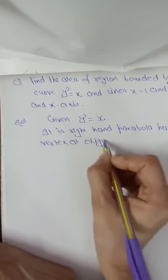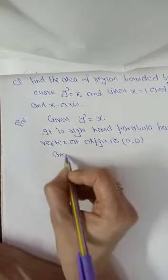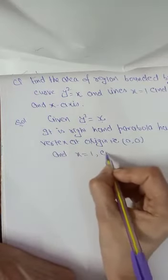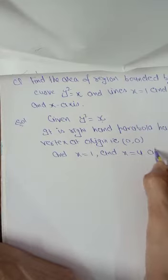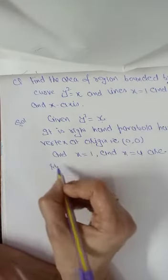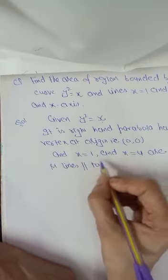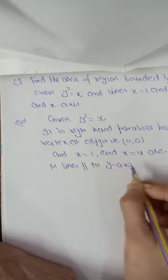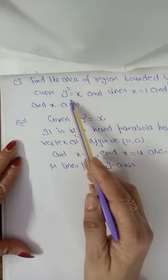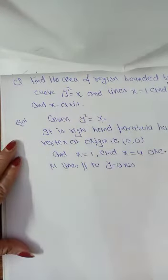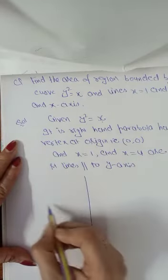And x equals to 1 and x equals to 4 are straight lines parallel to y-axis. So we have defined first curve is right hand parabola and we have given two lines. Now next point is to sketch the curve.